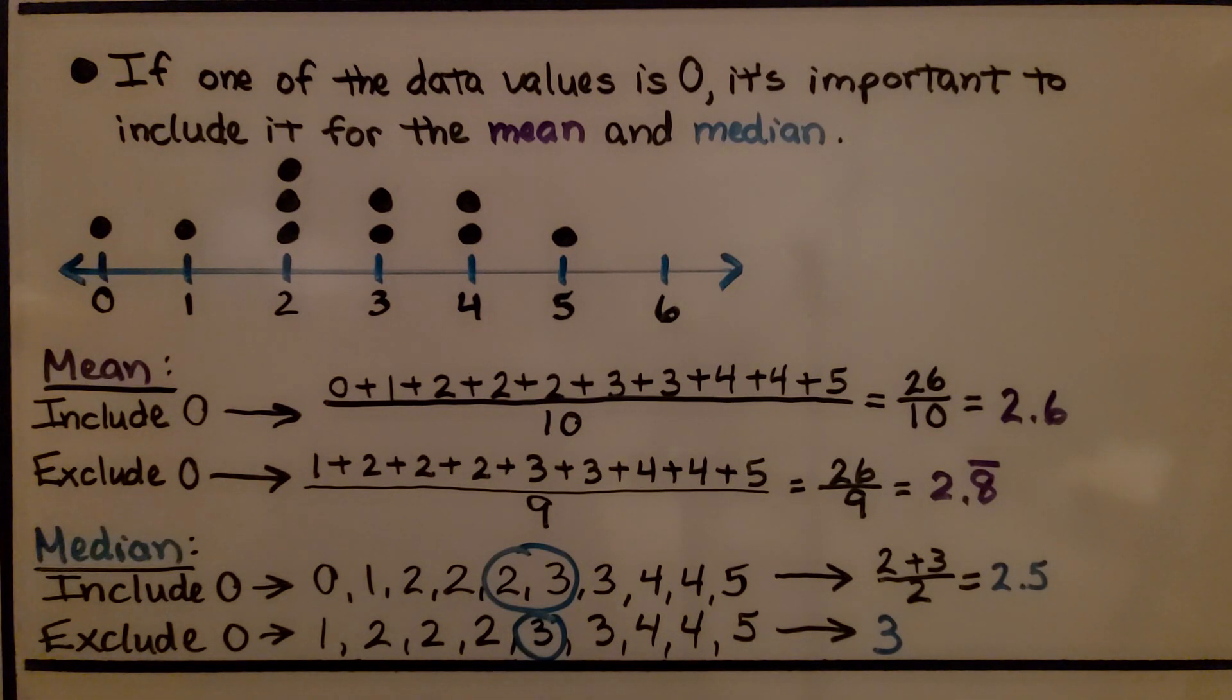So it's very important, if there's a data value that's a zero, that you need to include it to be accurate. For the mean, by excluding zero, we divide it by one less digit, which made the quotient greater. And for the median, by removing the zero, we shifted the median one digit to the right.